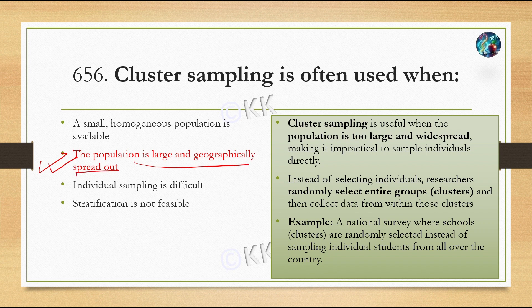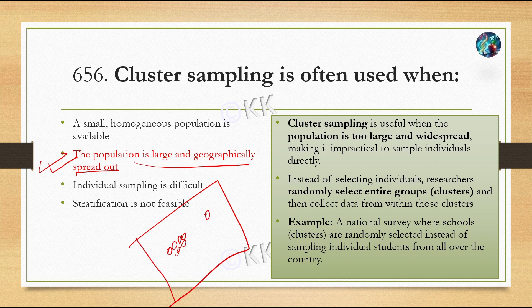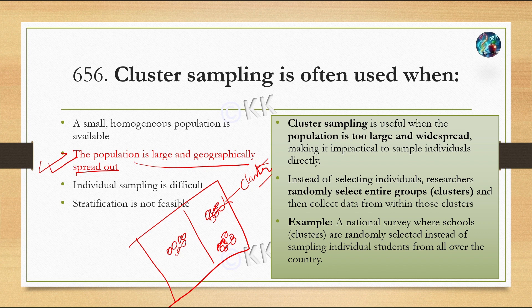Cluster means grouping together. When populations are large and geographically spread out, individual sampling becomes difficult. So instead of selecting individuals, researchers randomly choose clusters and collect data from them. Examples of cluster sampling include national surveys and surveys of schools.